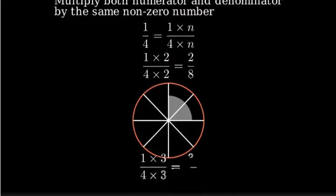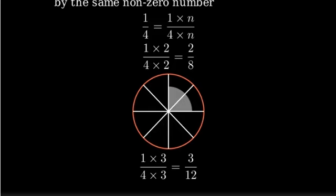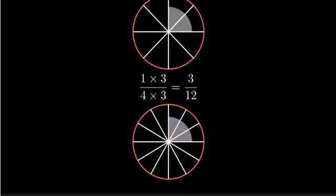Let's try another one. If we multiply by three, we get three-twelfths. Again, this represents the same portion of the whole, just divided into twelve equal parts instead of four.